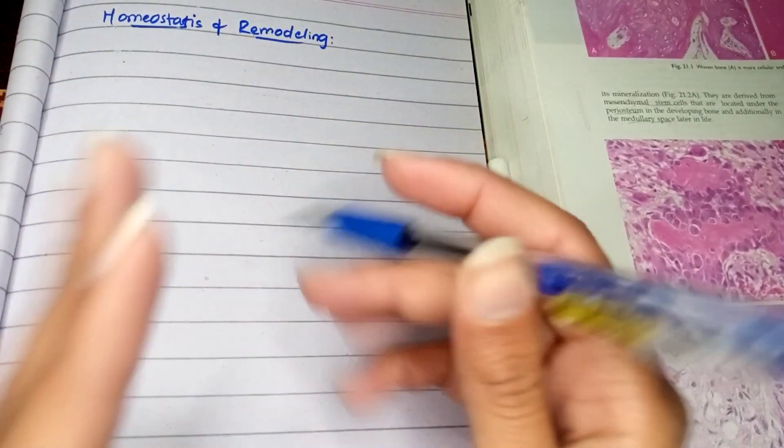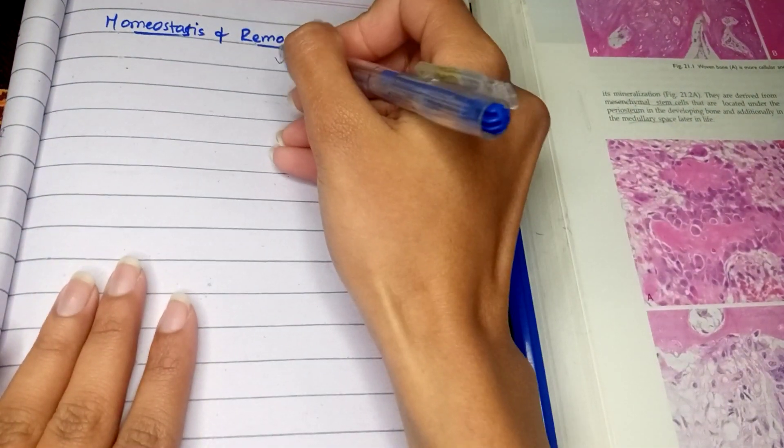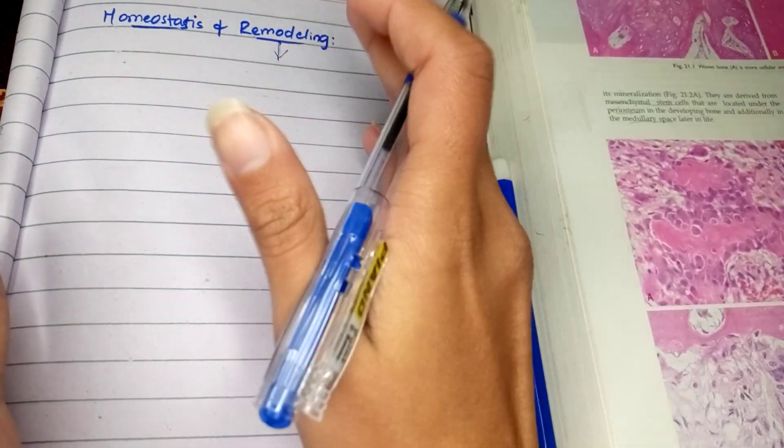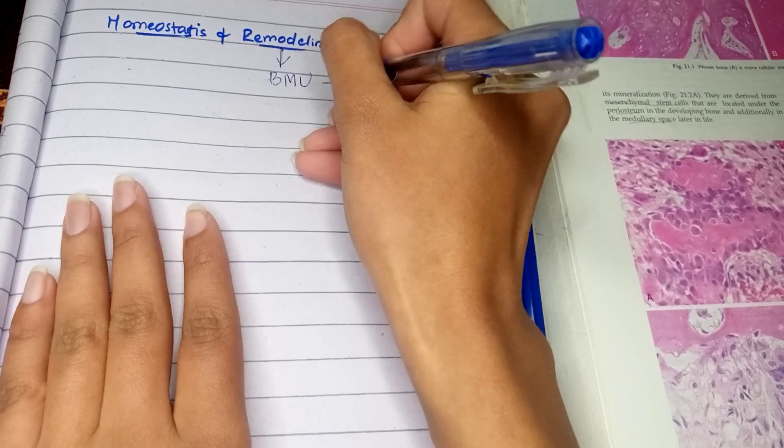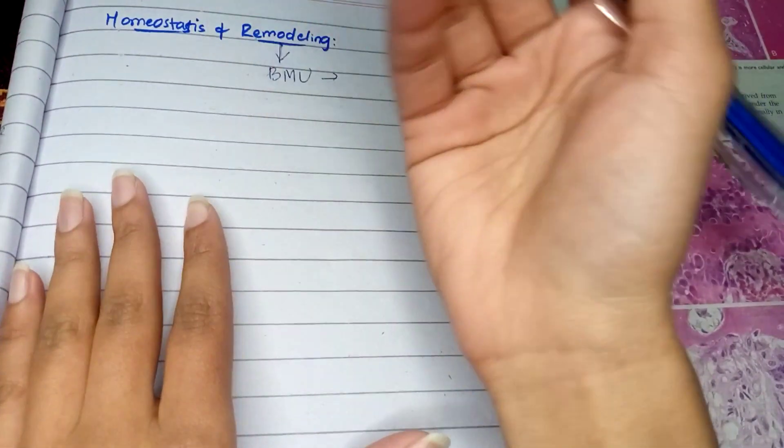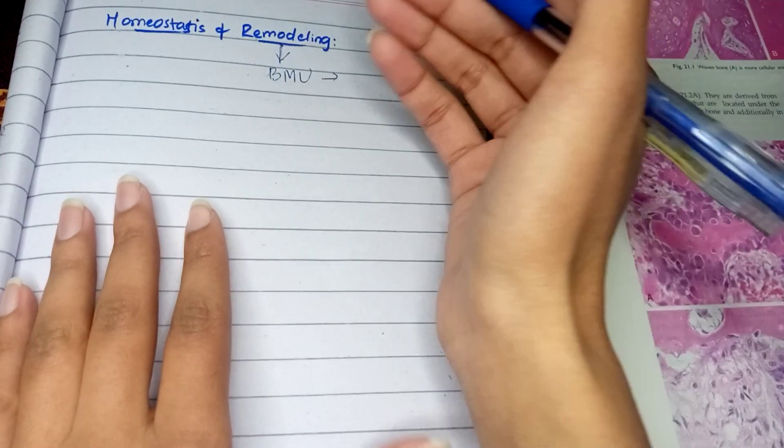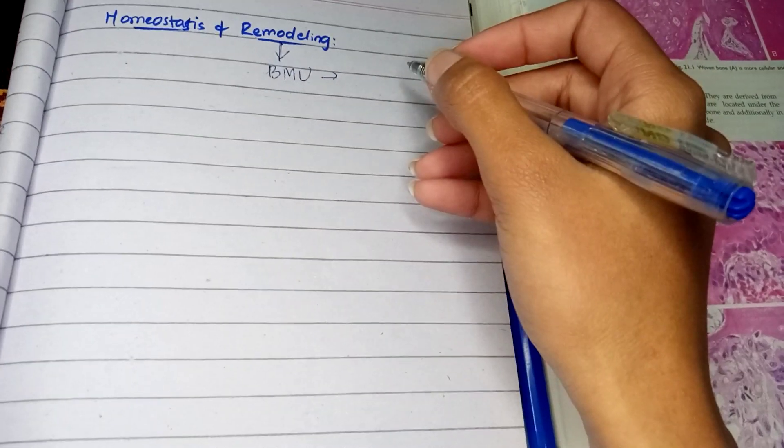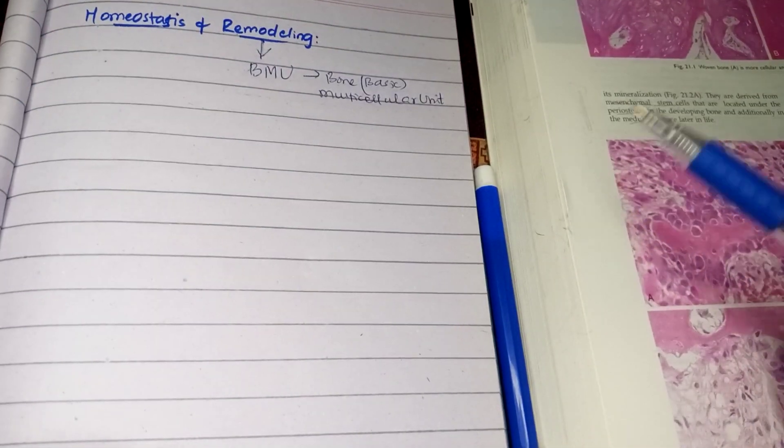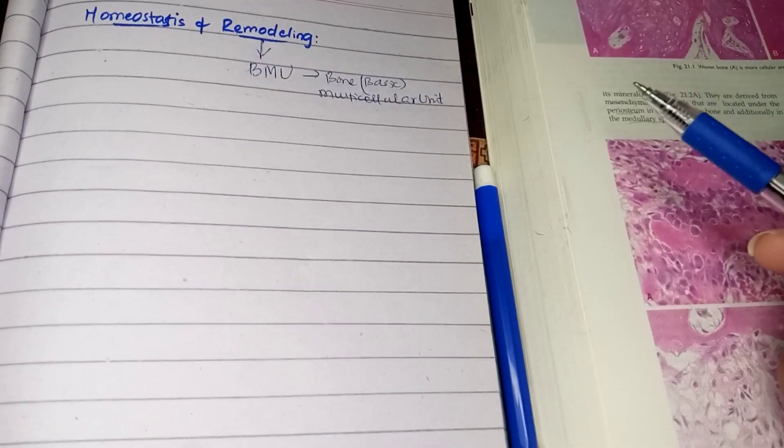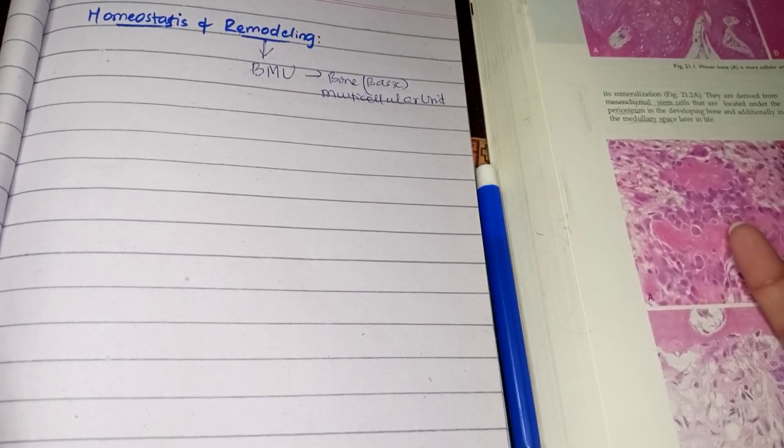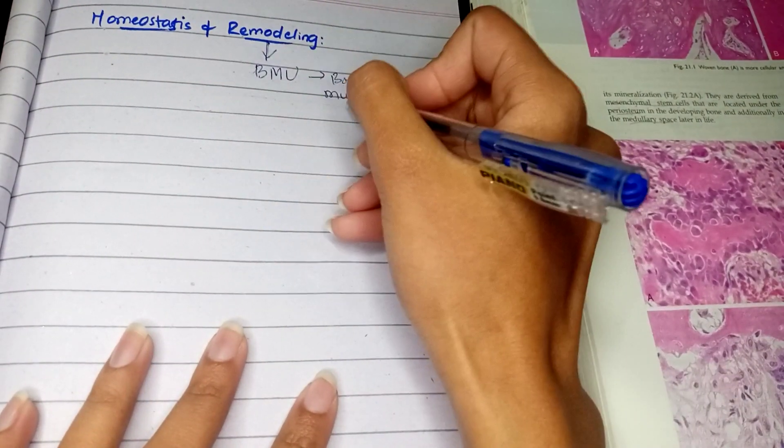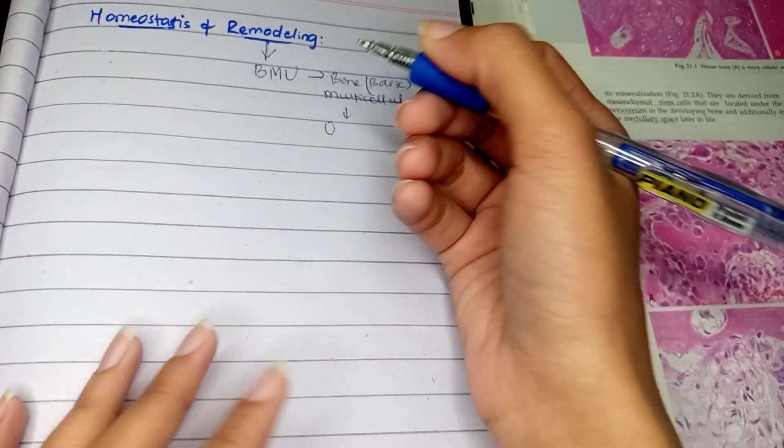The remodeling takes place at a microscopic locus referred to as a BMU. BMU is a bone basic multicellular unit. This unit has a couple of cells, a coupling of activity by the osteoclast and the osteoblast.